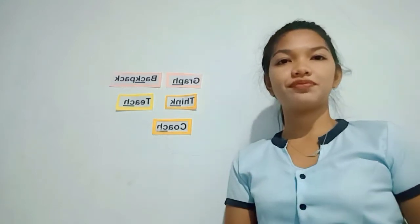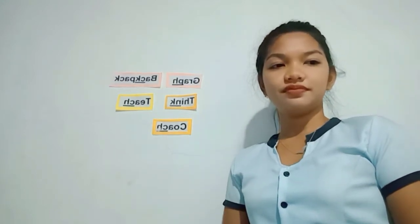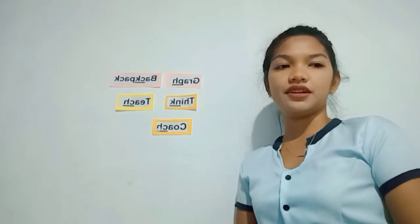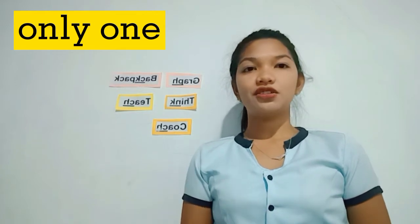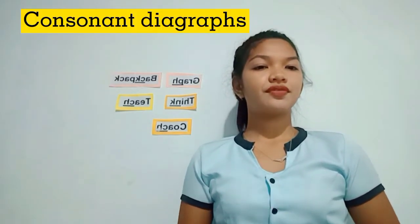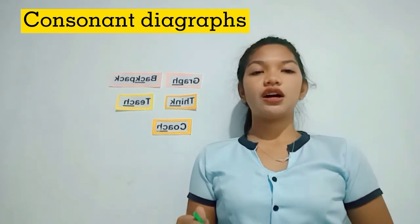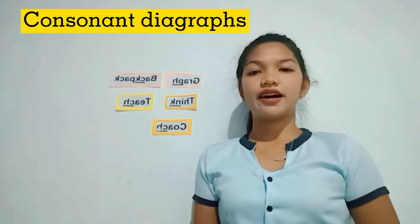What did you observe? Very good. Did you notice the underlined letters? How many sounds does each pair of the underlined letters have? Only one — correct. How do we call this letter combination? We call this combination a consonant digraph. Let's give a clap — one, two, three!